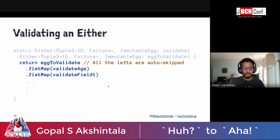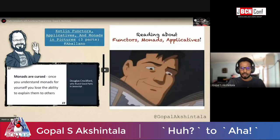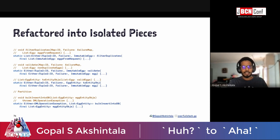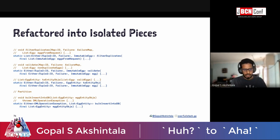Simply put: if you have certain validations on Either inside the validate function, none of those validations will happen if Either is on the left. This is how we isolated our refactored pieces into independent components — each function is independent and doesn't know what's happening outside its scope, there are no mutable data structures passing around, and exceptions have been replaced with Either.